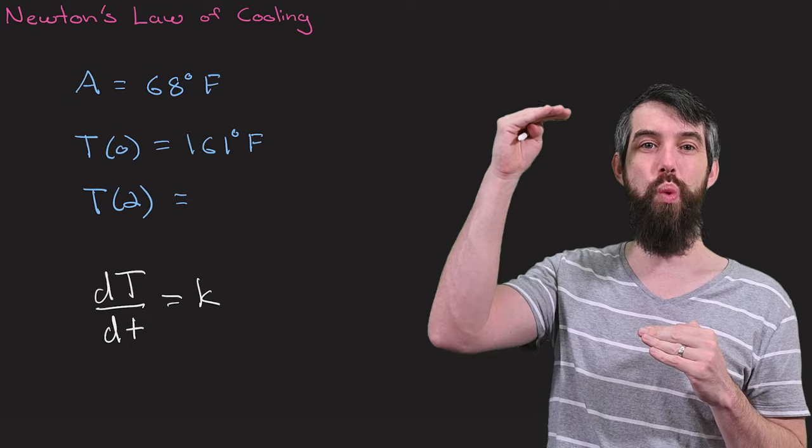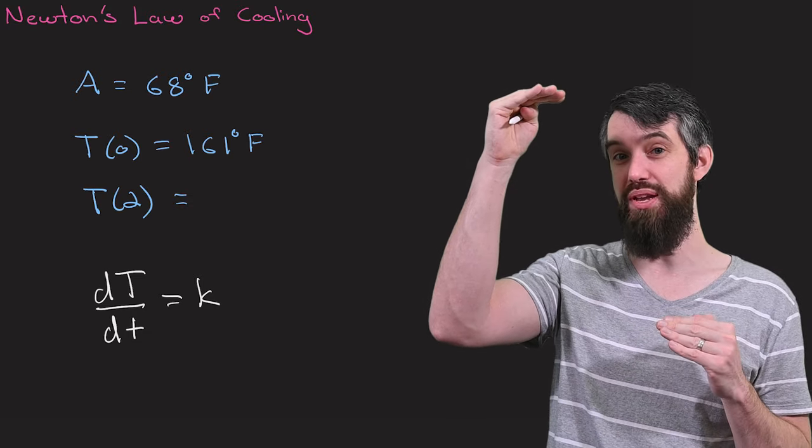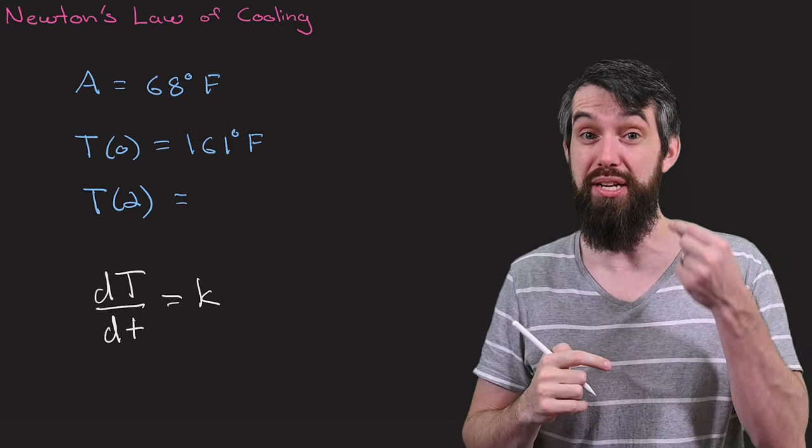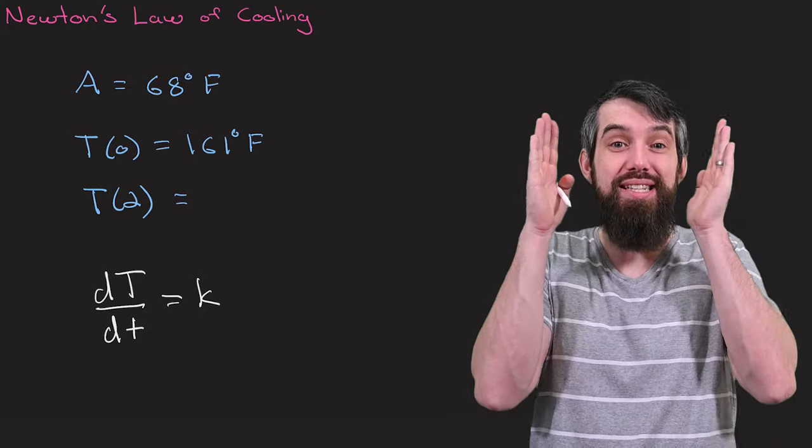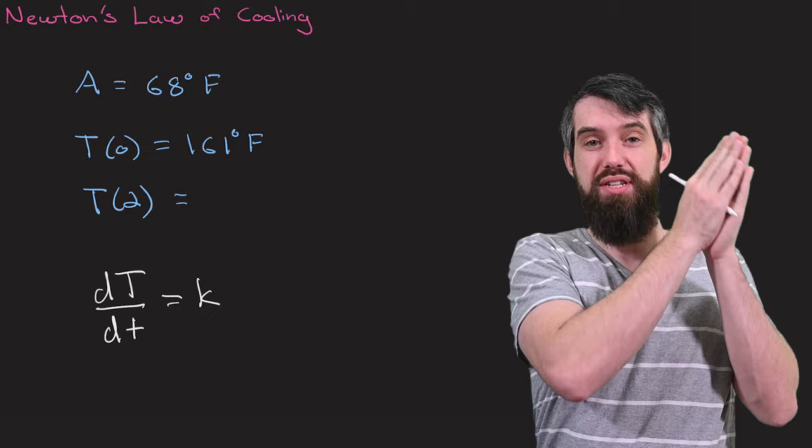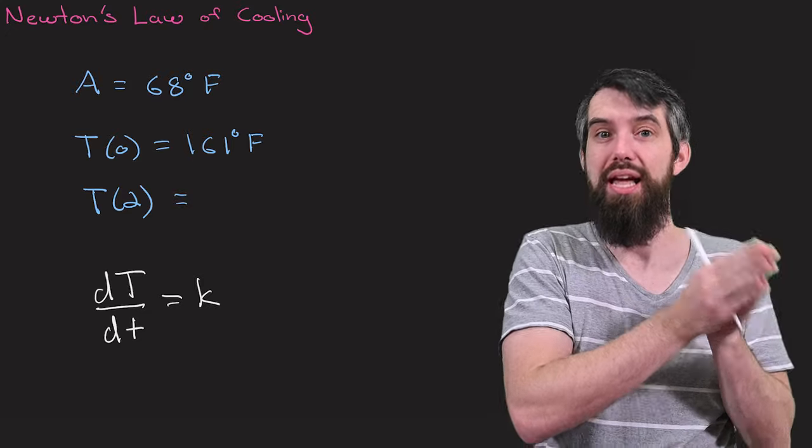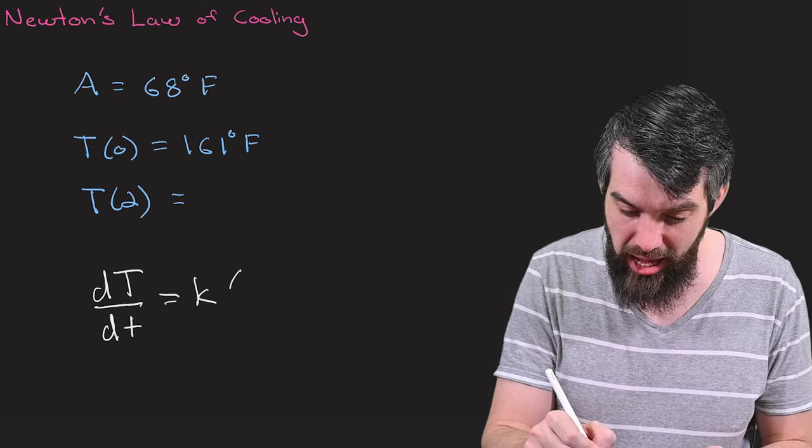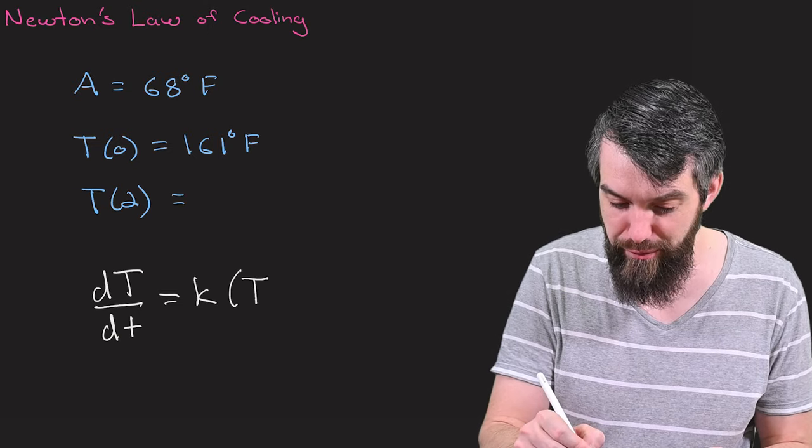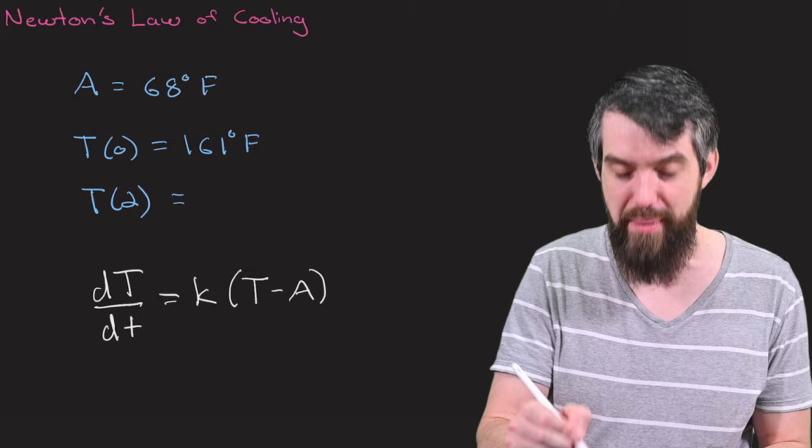But if the temperature was way above the ambient temperature, you might expect a rapid change. So indeed, I'm going to say this is proportional to the difference between the temperature of my mug, between my cup of tea, and the ambient temperature. So I will model it as K times the temperature of my mug minus the ambient temperature.